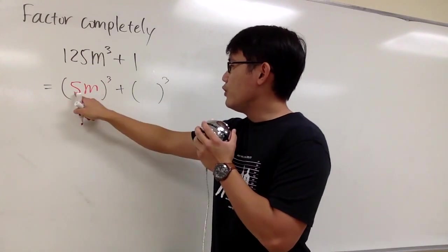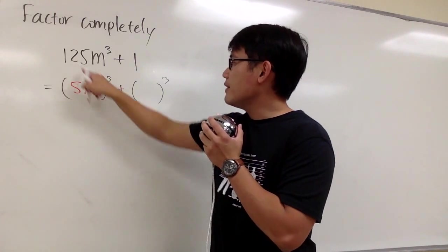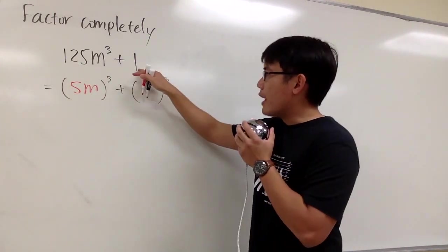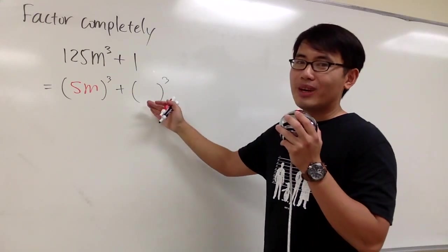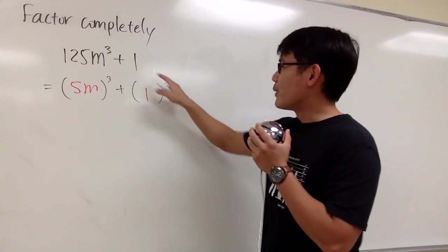As you can see, if you have 5m in the parenthesis raised to the third power, 5 to the third power is 125, and here is the m to the third power. And for the 1, what times what times what would be 1? 1 times 1 times 1 would be 1. So 1 to the third power is 1.